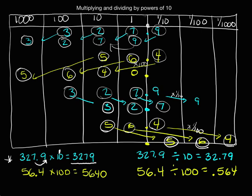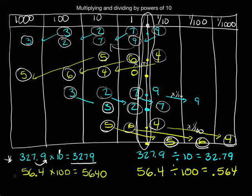In reality, the decimal is never moving — the digits are shifting. We talk about the decimal moving because when we're writing it, that's what we're physically doing. For 56 and 4 tenths times 100, there are two zeros in 100, so the decimal moves to the right two places, and we got 5,640. Again, the decimal didn't actually move, but when we're writing it, that's physically what we're doing. The important thing to remember is that the digits are shifting.